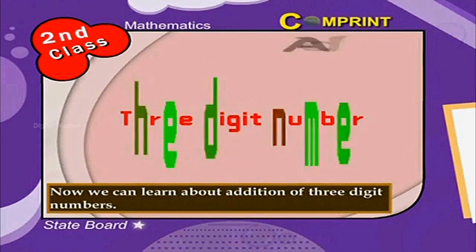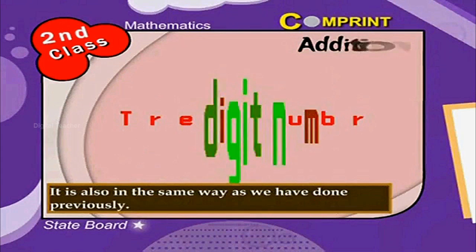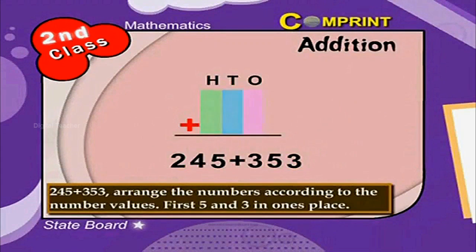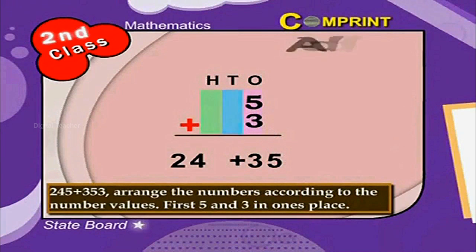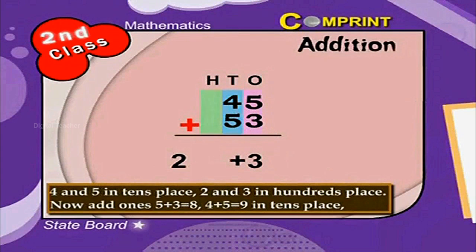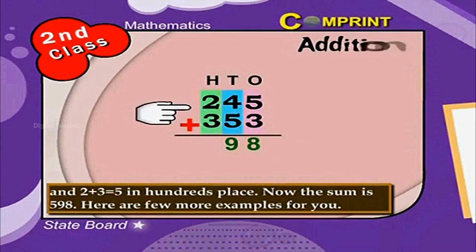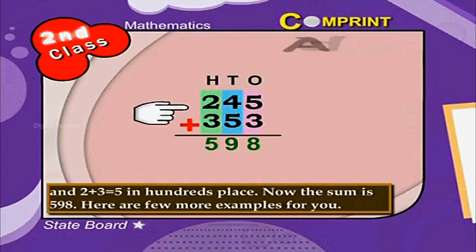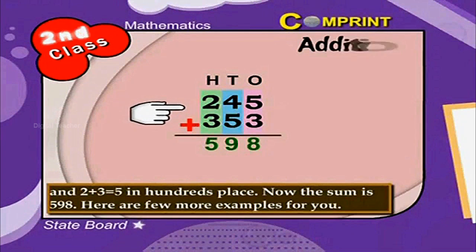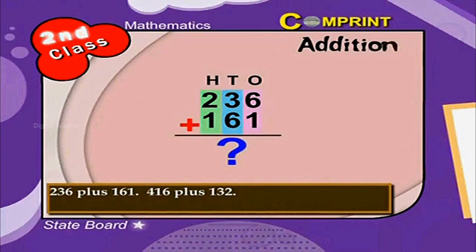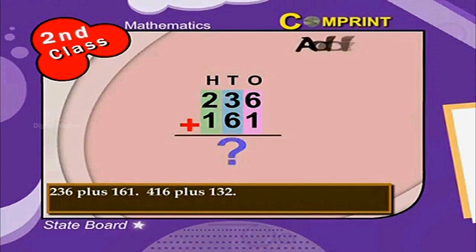Now we can learn addition of 3 digit numbers with 3 digit numbers, in the same way as done previously. Example: 255 plus 353. Arrange the numbers according to their number values: 5 and 3 in ones place, 5 and 5 in tens place, 2 and 3 in hundreds place. Add ones: 5 plus 3 is equal to 8. Then 5 plus 5 is equal to 10 in tens place, and 2 plus 3 is equal to 5 in hundreds place. The sum is 598. Here are a few more examples: 236 plus 161, and 416 plus 132.